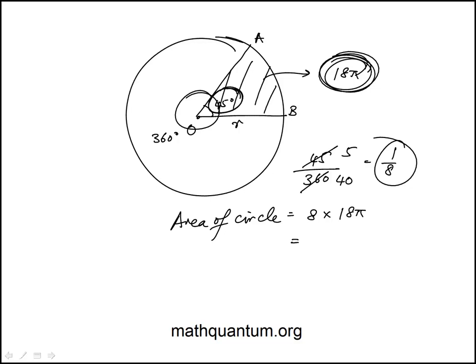So now we need to find the radius. If the radius is r, pi r squared is 8 times 18 pi, which means r squared is 8 times 18.